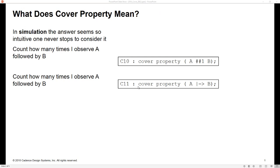If we wrote something like this, cover property A implies B, this is what many people unfortunately have been doing since the advent of the SystemVerilog Assertions Language Reference Manual from the year 2005 onwards. It wouldn't be a surprise to view these statements as being true: count how many times I observe A followed by B. This is what most people think they're doing when they write a property like C11.